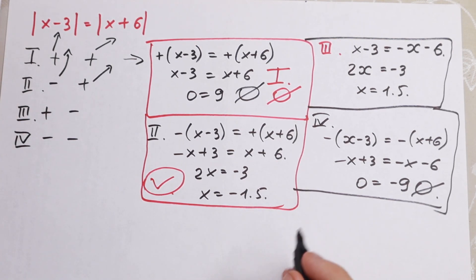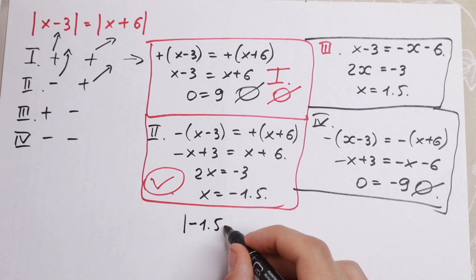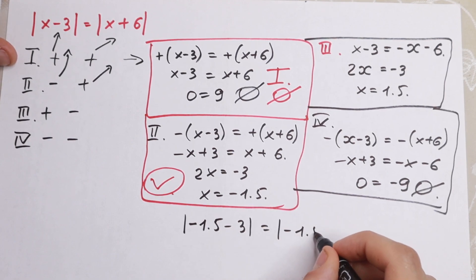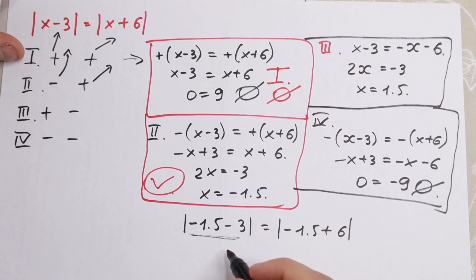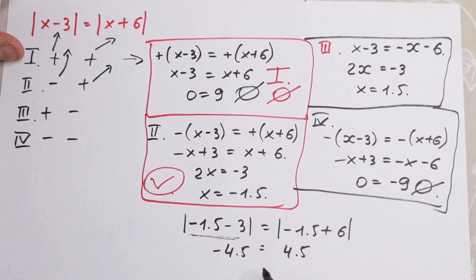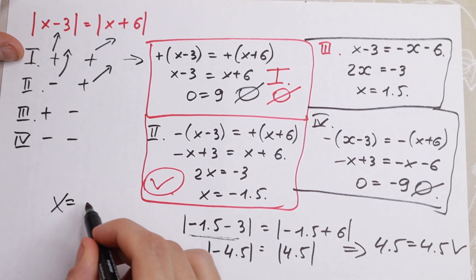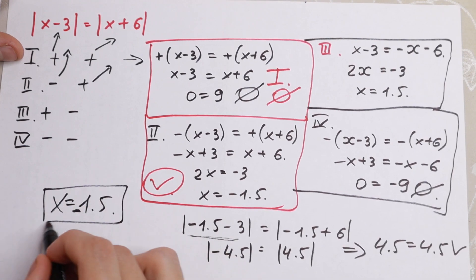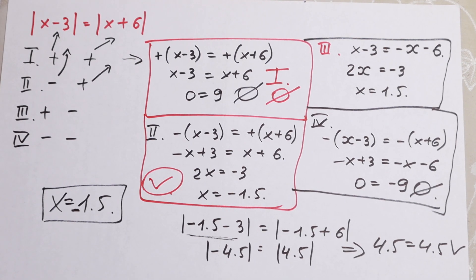In our case, we found x equal to minus 1.5, so let's check this root. Absolute value of minus 1.5 minus 3 equals minus 1.5 plus 6. The left side gives minus 4.5, and the right side gives 4.5. Since we have absolute value, the absolute value of minus 4.5 equals 4.5, so 4.5 equal to 4.5 — which is correct. Our answer is x equal to minus 1.5, the one and only root. This is my approach to solving absolute value problems. If you have another approach, write it in a comment — it will be really interesting to read. Thank you so much for watching!